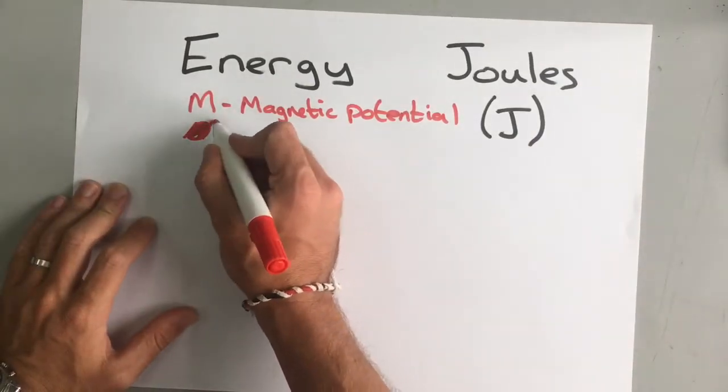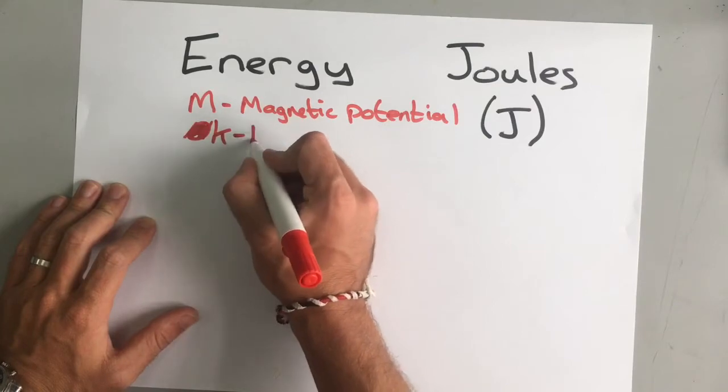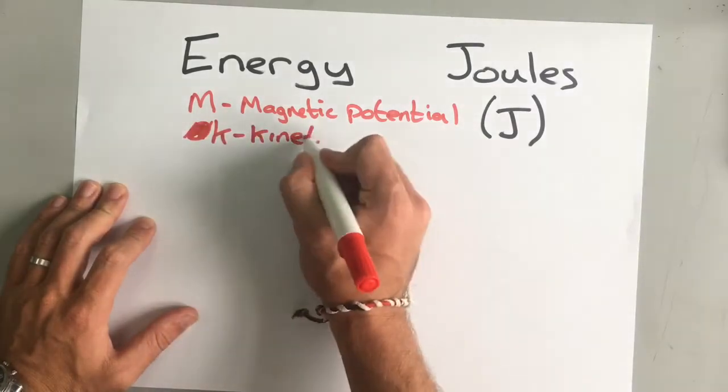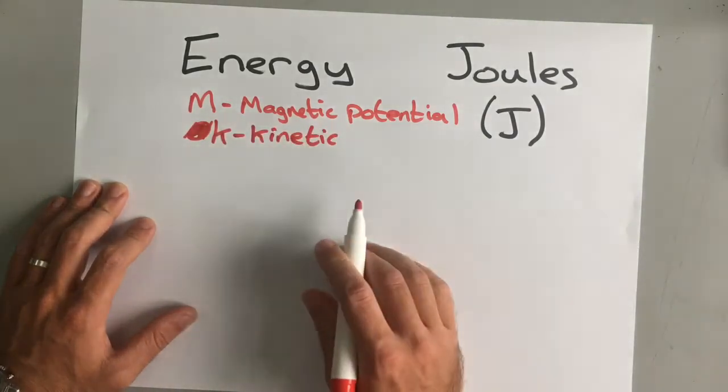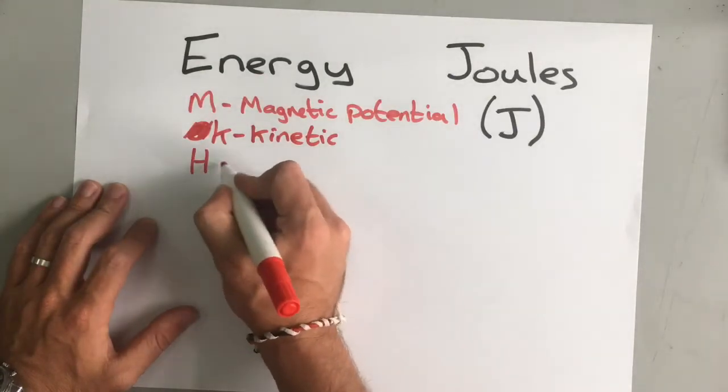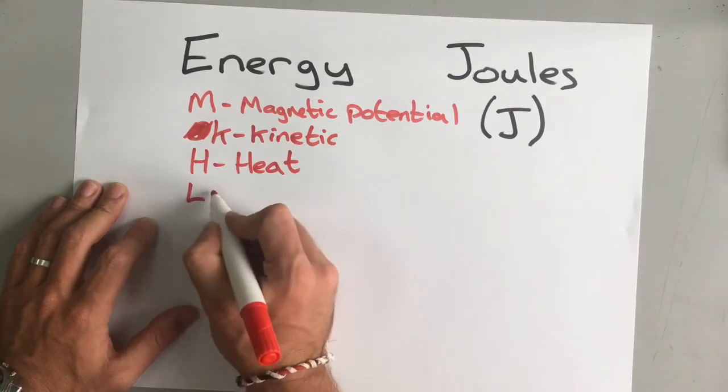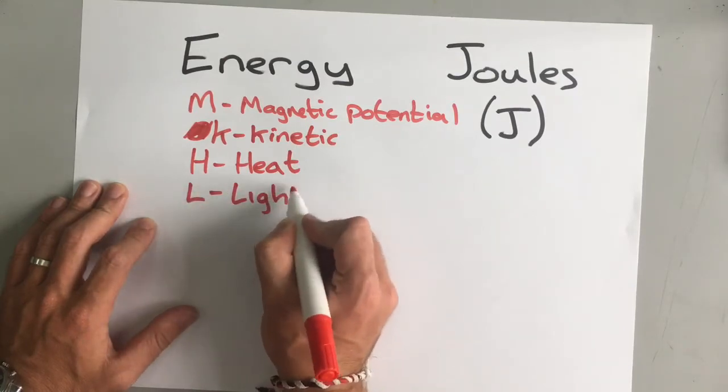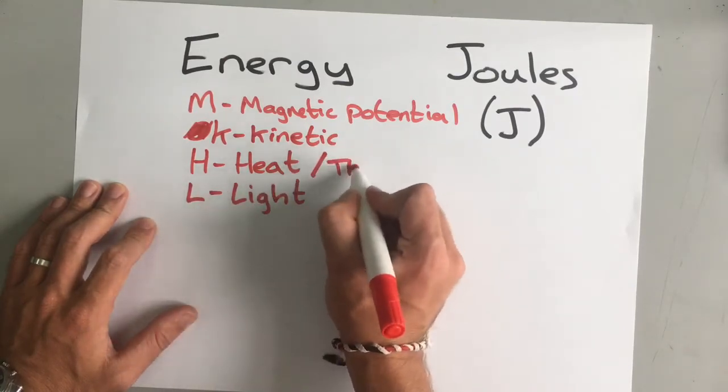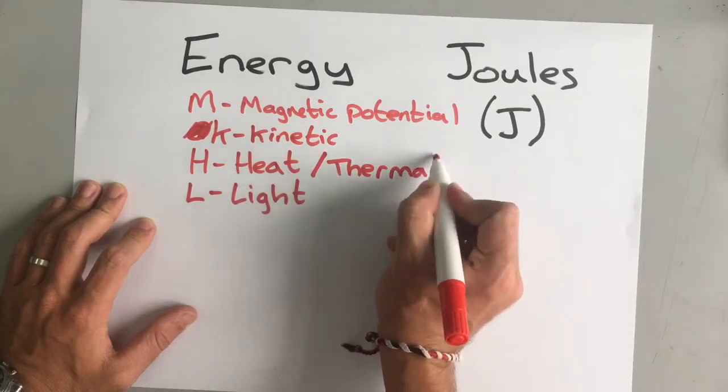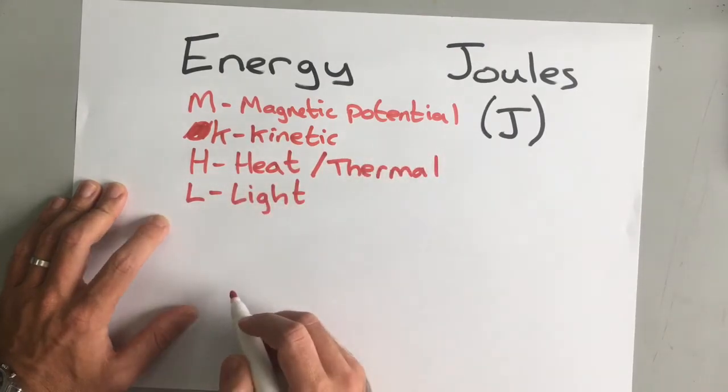Then we've got K for kinetic energy. Kinetic energy is anything moving. Then we've got H for heat energy. Anything that is hot has heat energy. Then we've got L for light energy. Heat is sometimes called thermal energy.